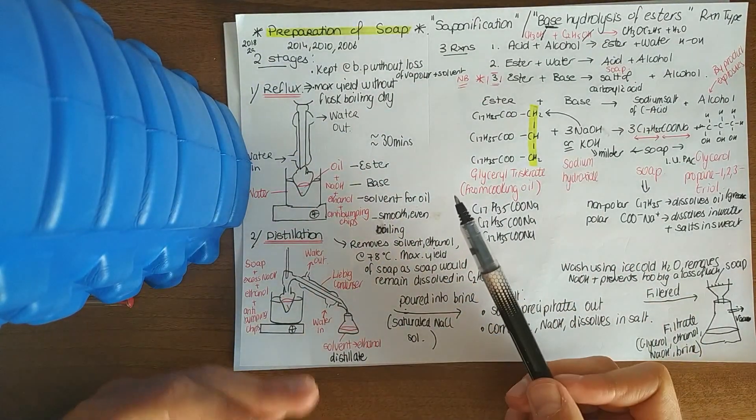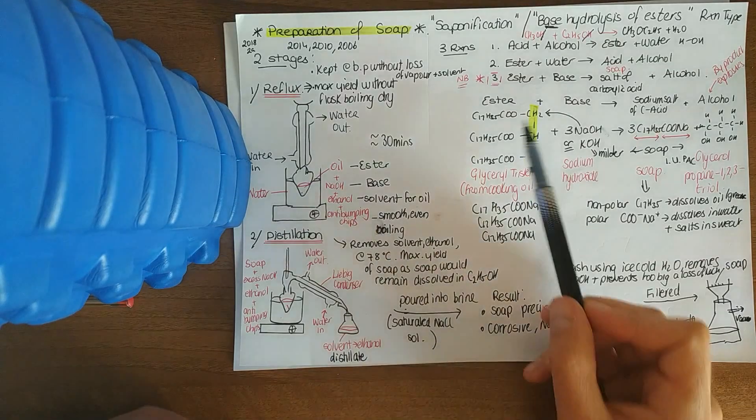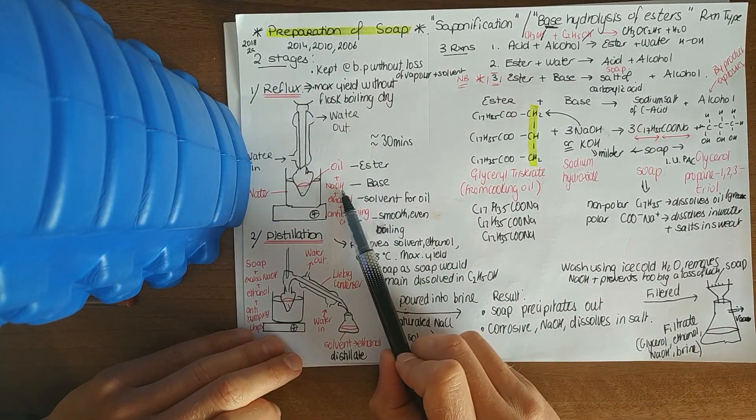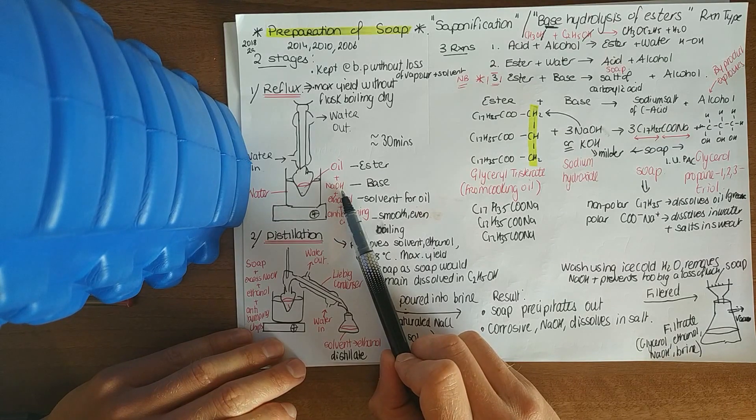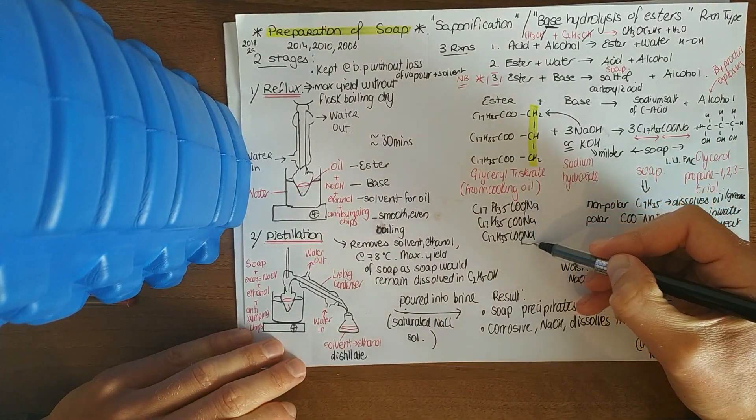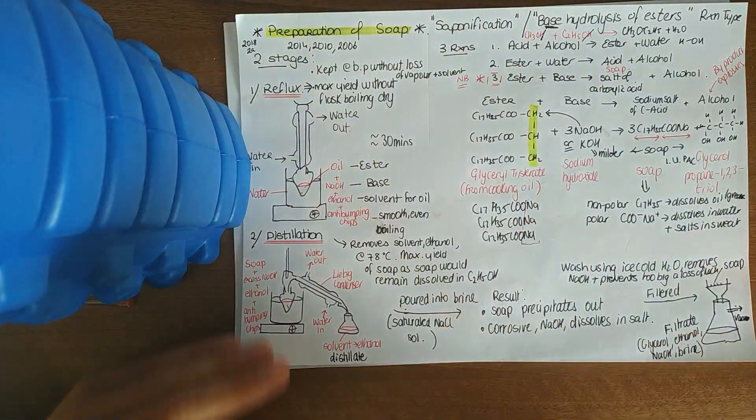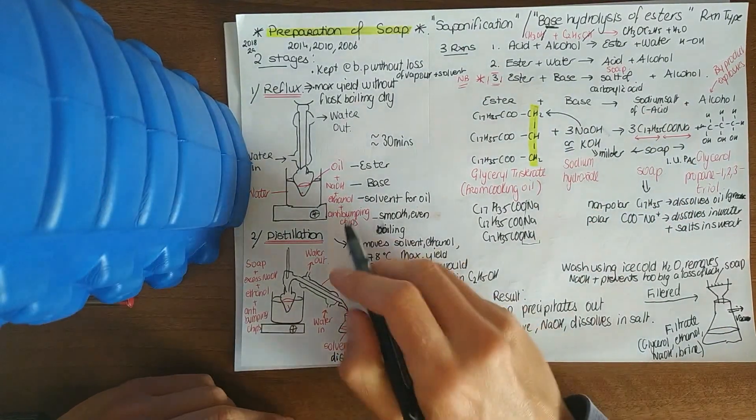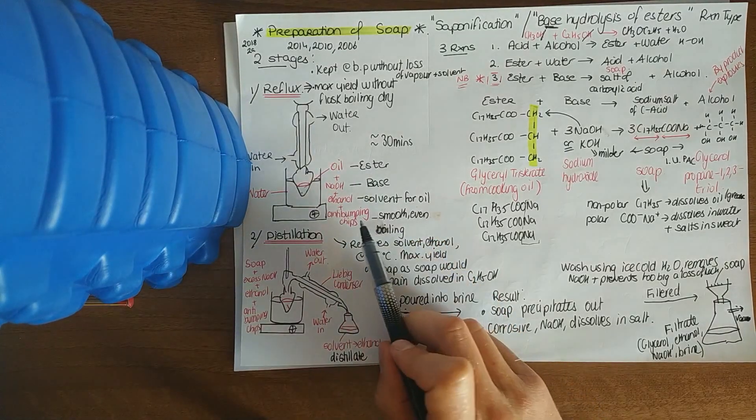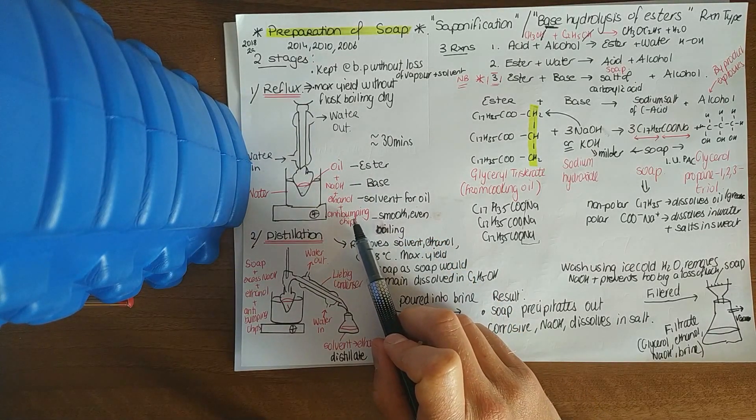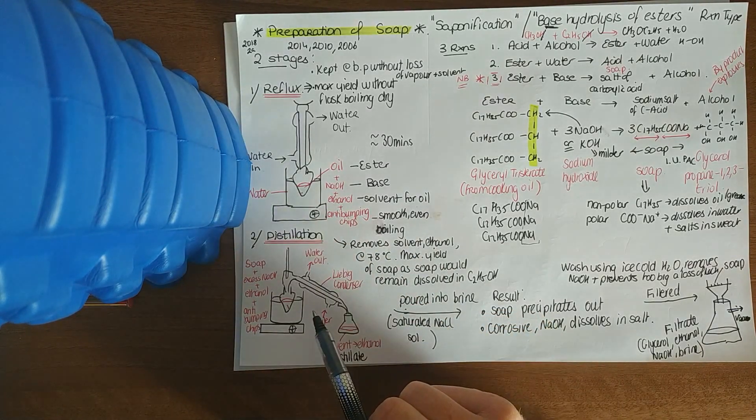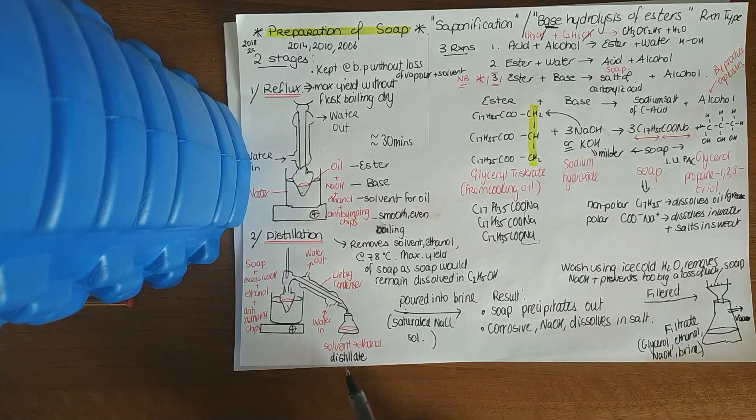You can repeat it with lard as well, that's your fat, still an ester in a solid form. Your base that you may use might be sodium hydroxide or potassium hydroxide. If you use potassium hydroxide, all you do is replace the Na's with K's at the end. You've used ethanol as a solvent to dissolve the oil, and you use some anti-bumping chips or anti-bumping granules for smooth, even boiling. Use a hot plate or a Bunsen burner in a beaker of water.